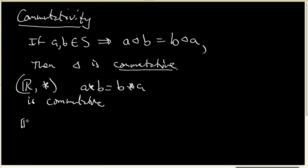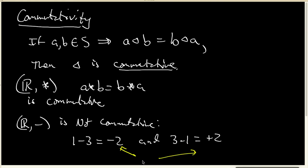But again, if I look at something like subtraction, subtraction is not commutative. Subtraction is not commutative because 1 minus 3 equals negative 2, while 3 minus 1 equals positive 2, and these, of course, are not the same.